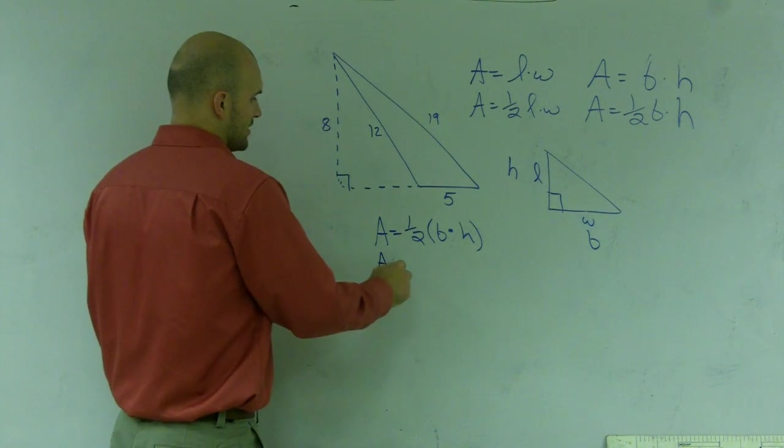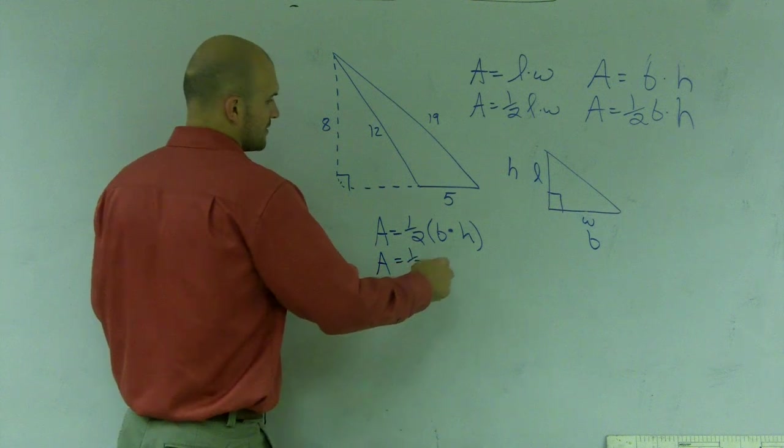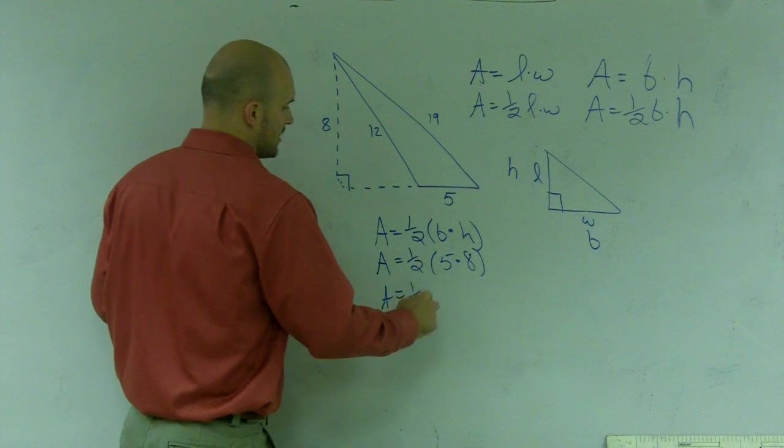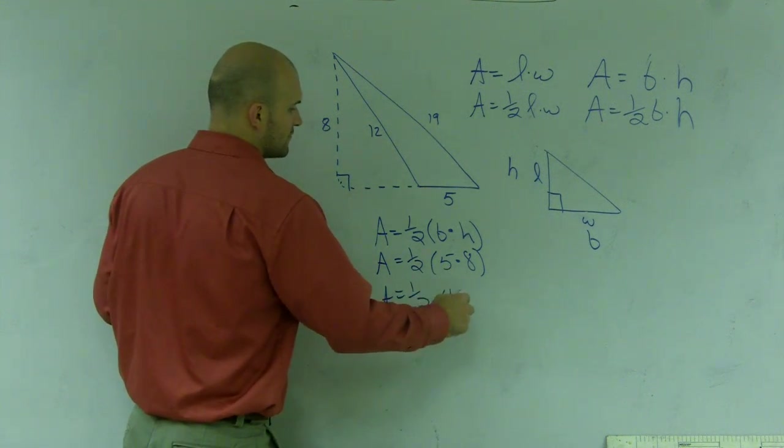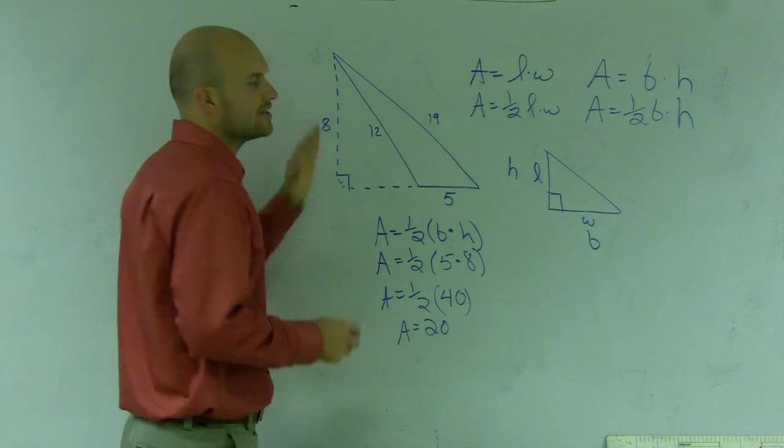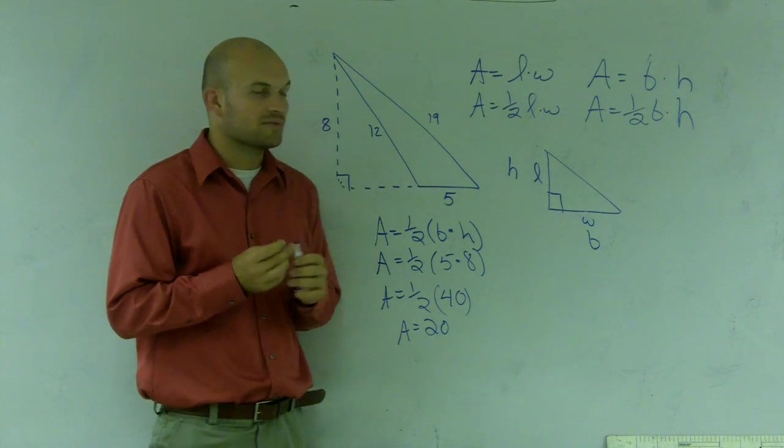So this triangle, I have area equals one-half times 5 times 8. So area equals one-half—5 times 8 is 40—area equals 20. So that's how you find the area of an oblique triangle.